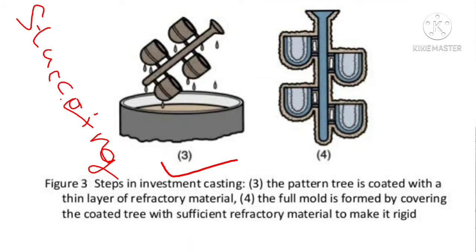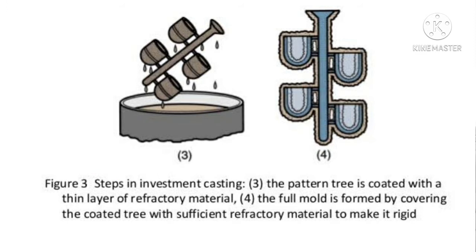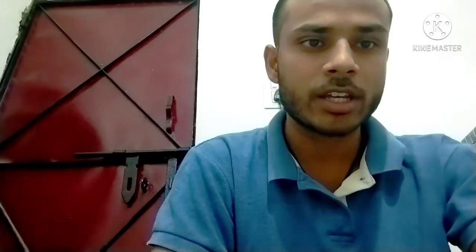The third step is that we dip this pattern into a slurry, which is basically made up of refractory material — a mixture of fine grain silica, ceramics, water, and ethyl silicate. Ceramic is the main product in this mixture, and because it is very costly, this process is known as investment casting.